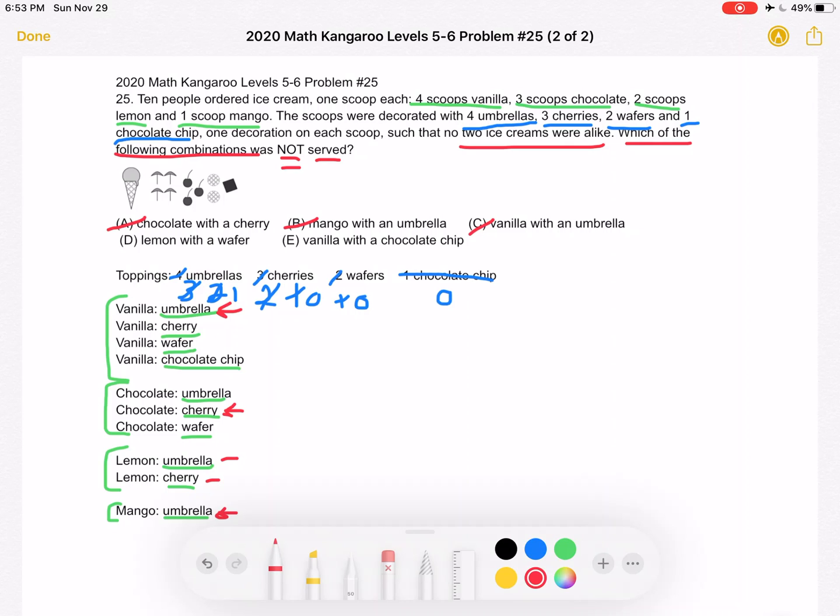But let's look at E, just to make sure. E, we have vanilla with a chocolate chip, and that's right there. So yes, D is the combination that is not served, and that must be our correct answer. Thank you so much for watching, and please subscribe if you would like to see more videos.